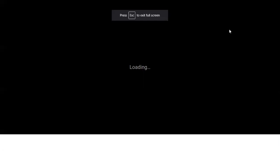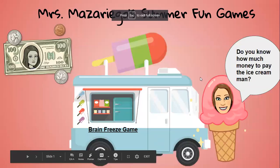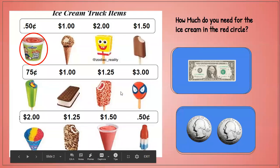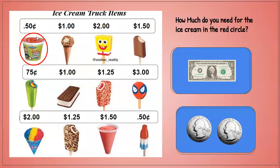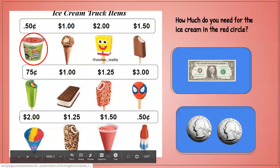Here I have my game — we're going to get it into present mode. It says 'Do you know how much money to pay the ice cream man?' The name of this game is called Brain Freeze, right — you want to get the ice cream so you can get that brain freeze! Each slide has an ice cream menu, and there's going to be a red circle indicating the ice cream that you're going to purchase.